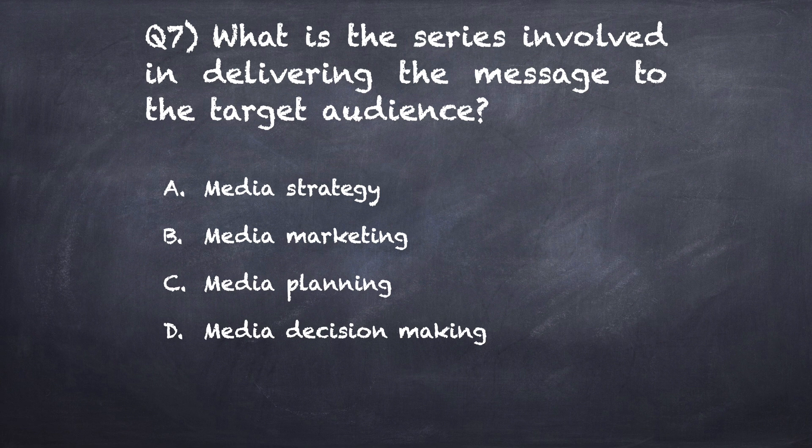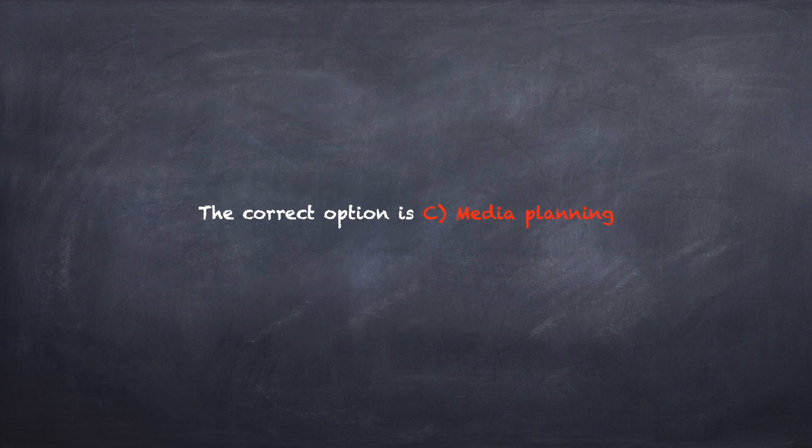Question number seven: What is the series involved in delivering the message to the target audience? Option A: media strategy. Option B: media marketing. Option C: media planning. Option D: media decision making. The correct option is C, media planning.